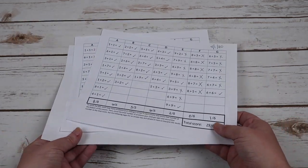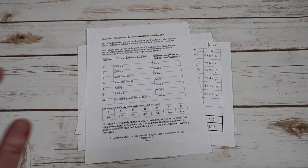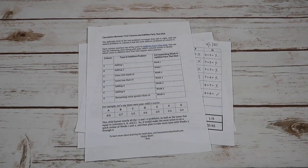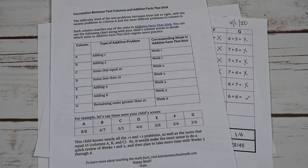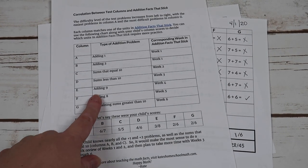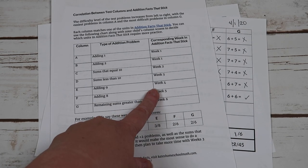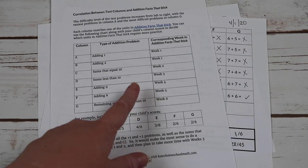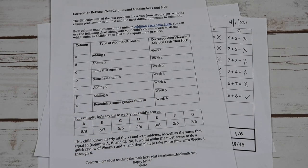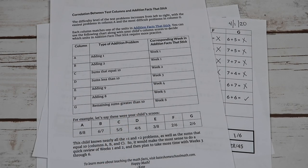So included is an answer key. But what I really, really appreciated was this paper right here. I'm going to zoom in so you guys can see a little bit better. Okay. So you can see here that column E is adding nine and that tells me that that corresponds to week four within the addition facts that sticks book. So I know that now that I have the addition facts that stick, I need to start in week four. That is where Emily would place within them.